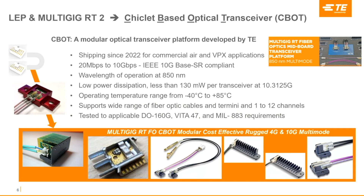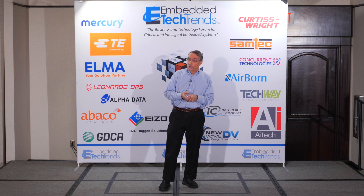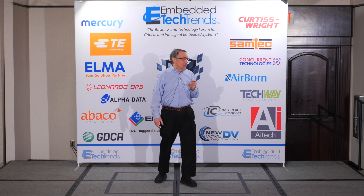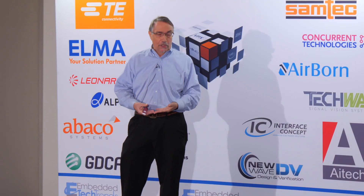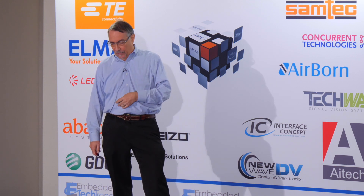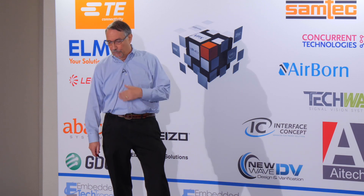The product line summary: we've been shipping to development partner customers since about 2022, primarily commercial air but with one VPX application. It's capable of running from 20 megabits to 10 gigabits per second. It's a multi-mode system — most platforms are small enough that you don't need single mode distances. Very low power: you can build a 10 gigabit transceiver consuming only about 130 milliwatts, which improves laser reliability over the system lifetime. It runs from minus 40 to 85°C and has been tested to applicable commercial aviation and Vita military standards.